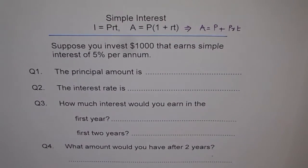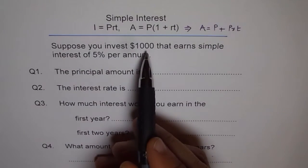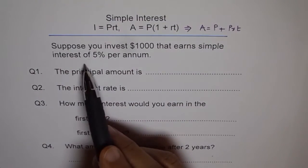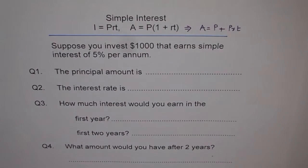Suppose you invest $1000 that earns simple interest of 5% per annum. The principal amount is - yes, let us get the basics. I do not really want to jump into problems without getting the basics clear.